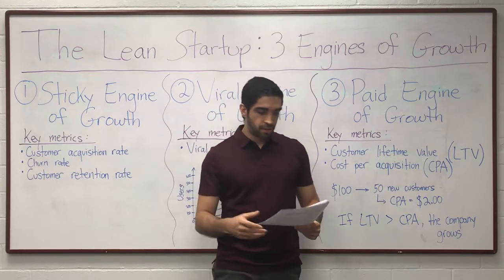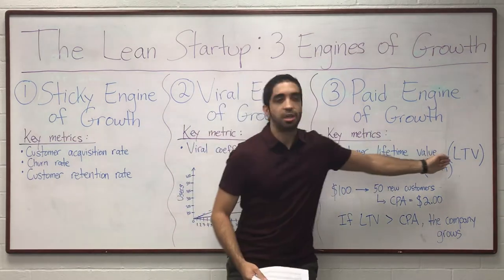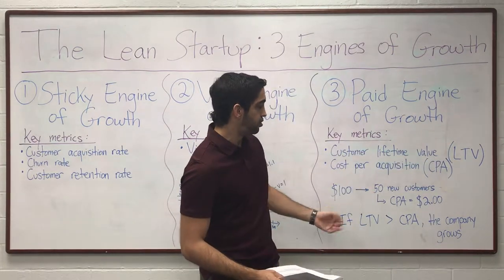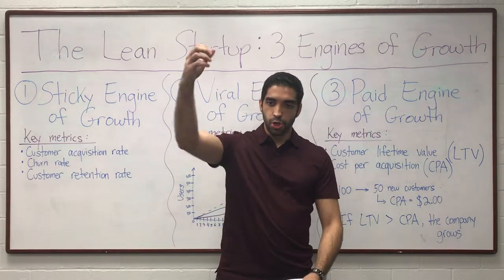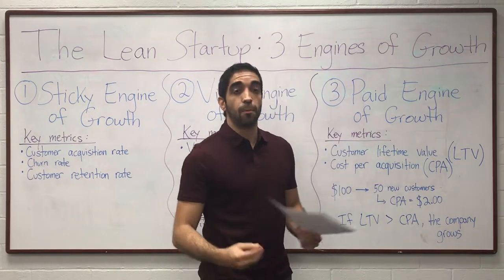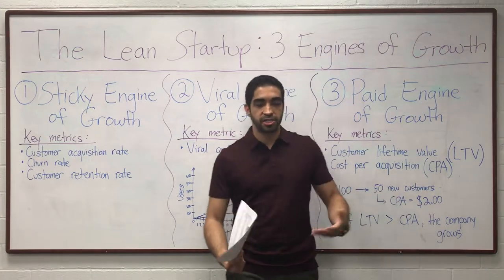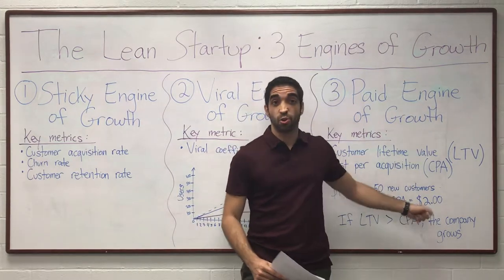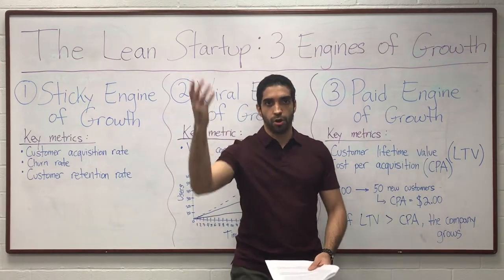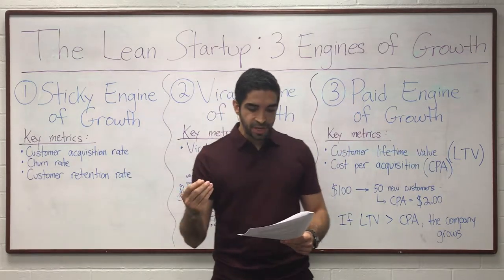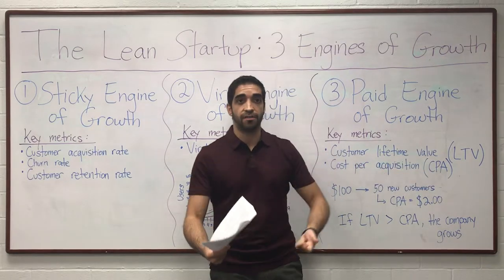If the product's LTV is greater than the CPA, the company will grow. For example, if the LTV is $50 and the CPA is $2, the paid engine of growth is working. Think of it like a machine where you pour money in from the top and get back more revenue from the bottom. The margin between the LTV and the CPA determines how fast the paid engine will turn — the bigger the difference, the more growth you will have.